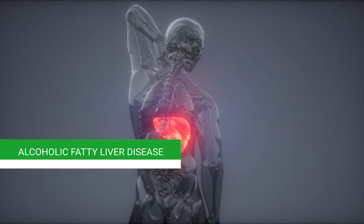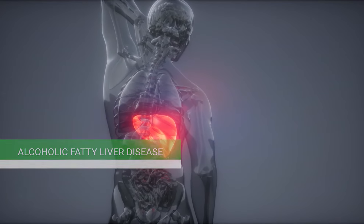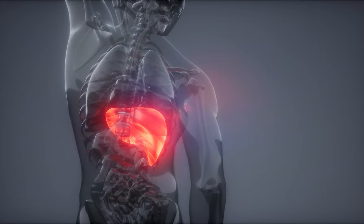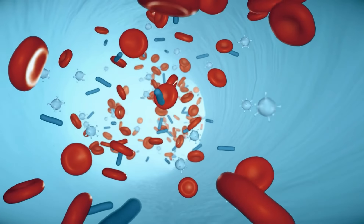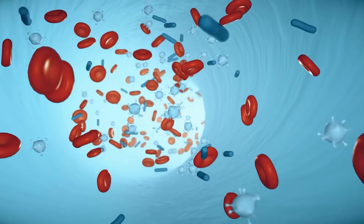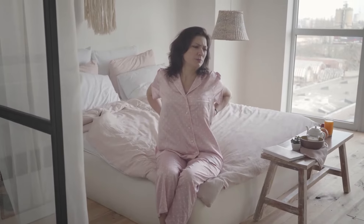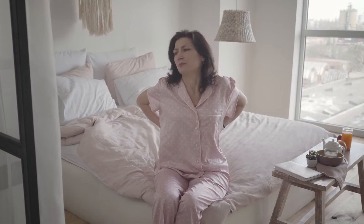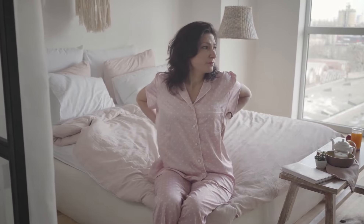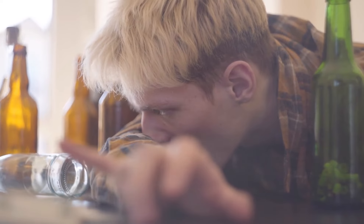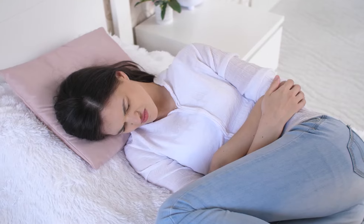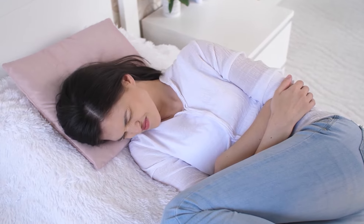Heavy alcohol use causes alcoholic fatty liver disease. The majority of the alcohol you consume is broken down by your liver and excreted from your body. However, the process of breaking it down can release hazardous compounds that can harm liver cells, cause inflammation, and compromise your body's natural defenses. The more alcohol you consume, the more harm you do to your liver. Alcoholic fatty liver disease is the earliest stage of alcohol-related liver disease, with acute alcoholic hepatitis and cirrhosis being the next phases.